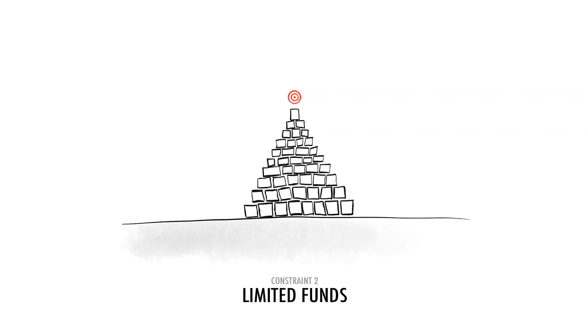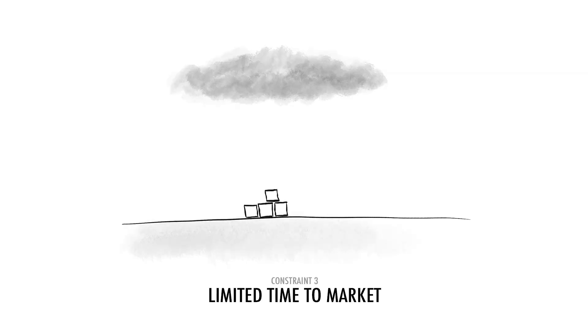Two: another common constraint is simply lack of money. All these blocks are expensive to build and you can't afford to build every block in the perfectly stacked pyramid, so you have to find a way to architect your tower efficiently. Three: you might have some kind of time constraint. Maybe you have competitors that you want to beat to market, or some other reason why the window of opportunity is going to expire, so you want to get to the target as fast as you can.